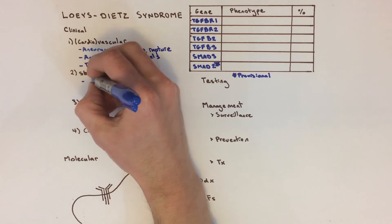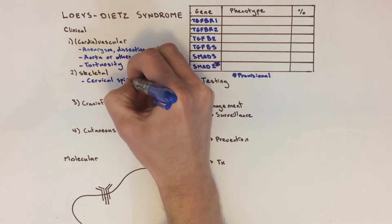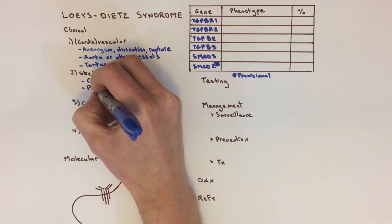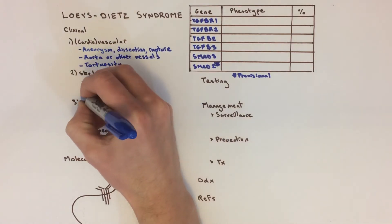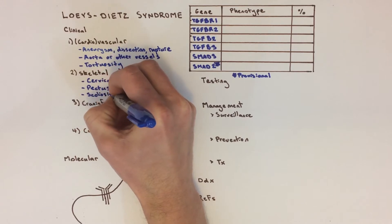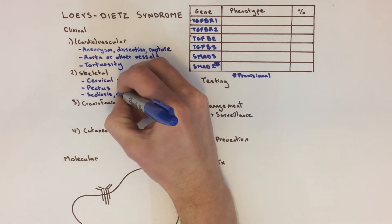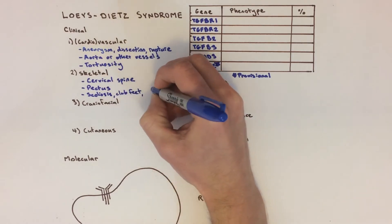Key skeletal features of Loeys-Dietz syndrome include cervical spine malformations and instability, pectus excavatum or carinatum, which is where the chest dips in or protrudes out as a consequence of rib overgrowth, scoliosis, club feet, joint laxity including hip dislocation, joint contracture which is typically fingers that don't straighten all the way, flat feet, and osteoporosis.